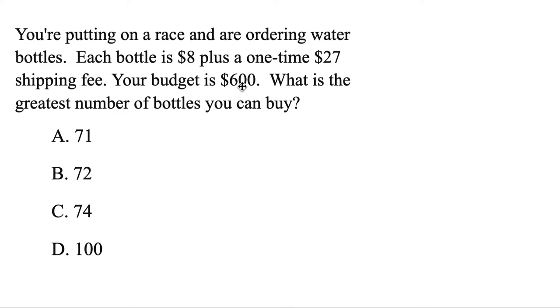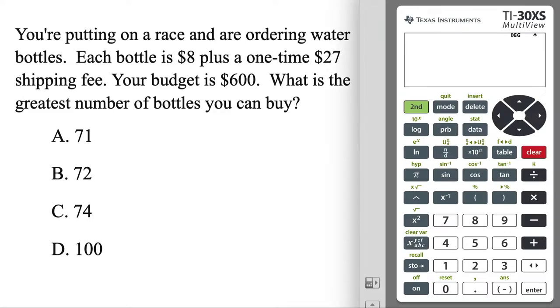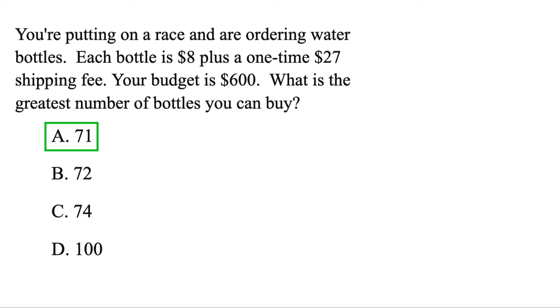For this one, we've got a budget of $600. We're going to order bottles that are $8, and there's a $27 shipping fee. What's the greatest number of bottles that we could buy? Well, let's start with the total, $600, subtract out the shipping fee. And from here, then we'll find out how many bottles we could get. Divide by 8. 71.6. But notice we can't actually afford 72. So when it comes to money, just round it down. That's 71.